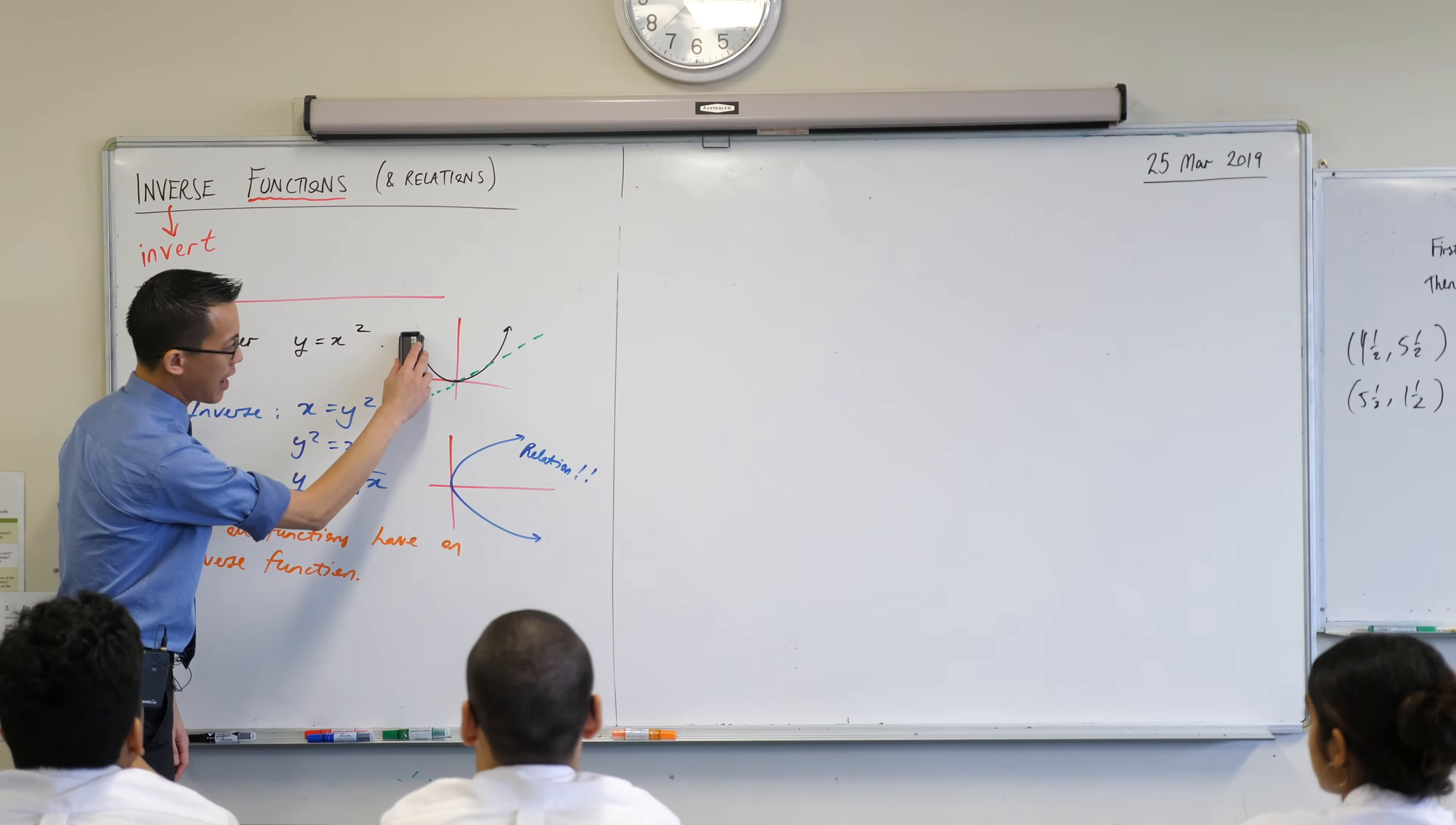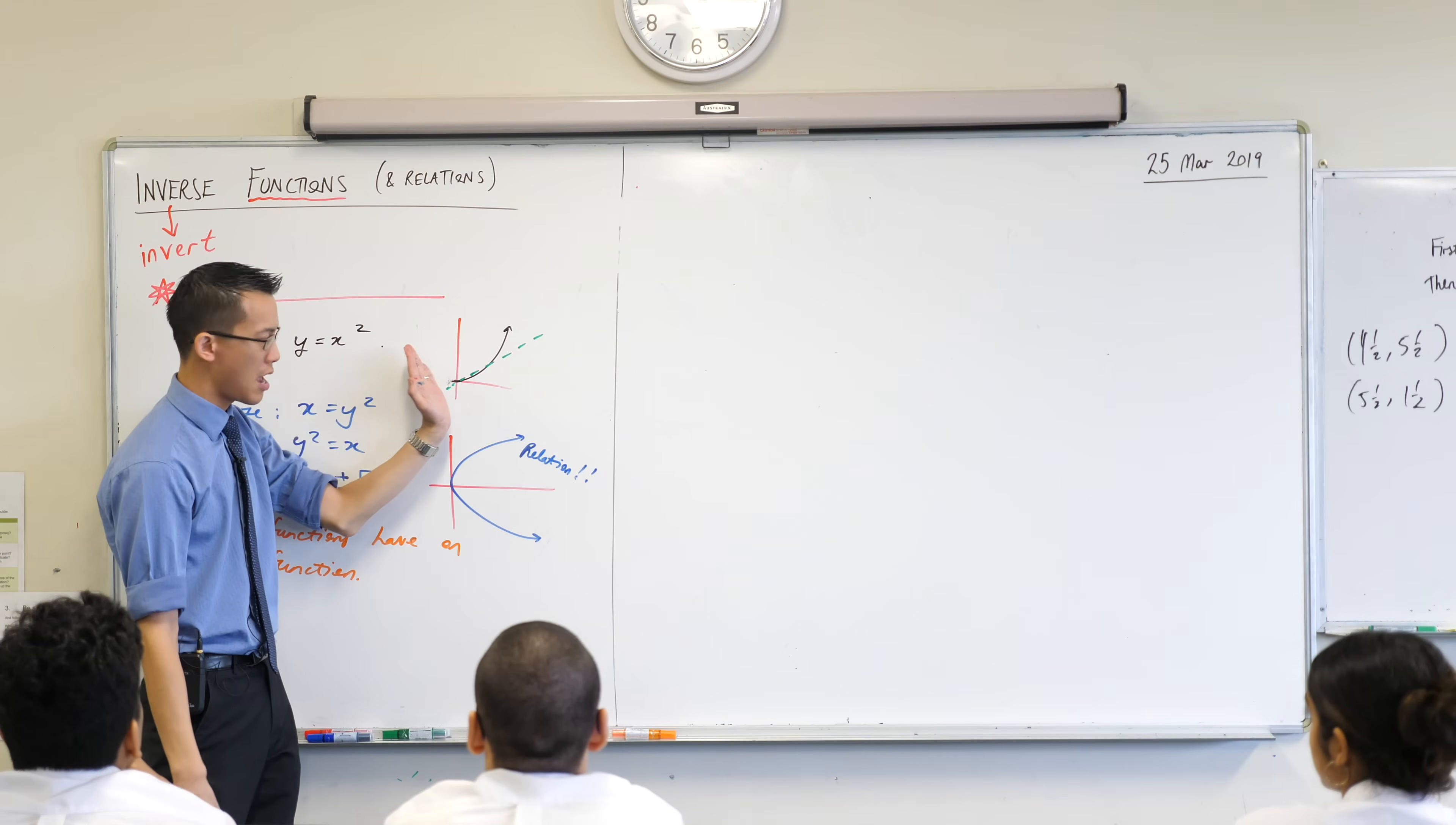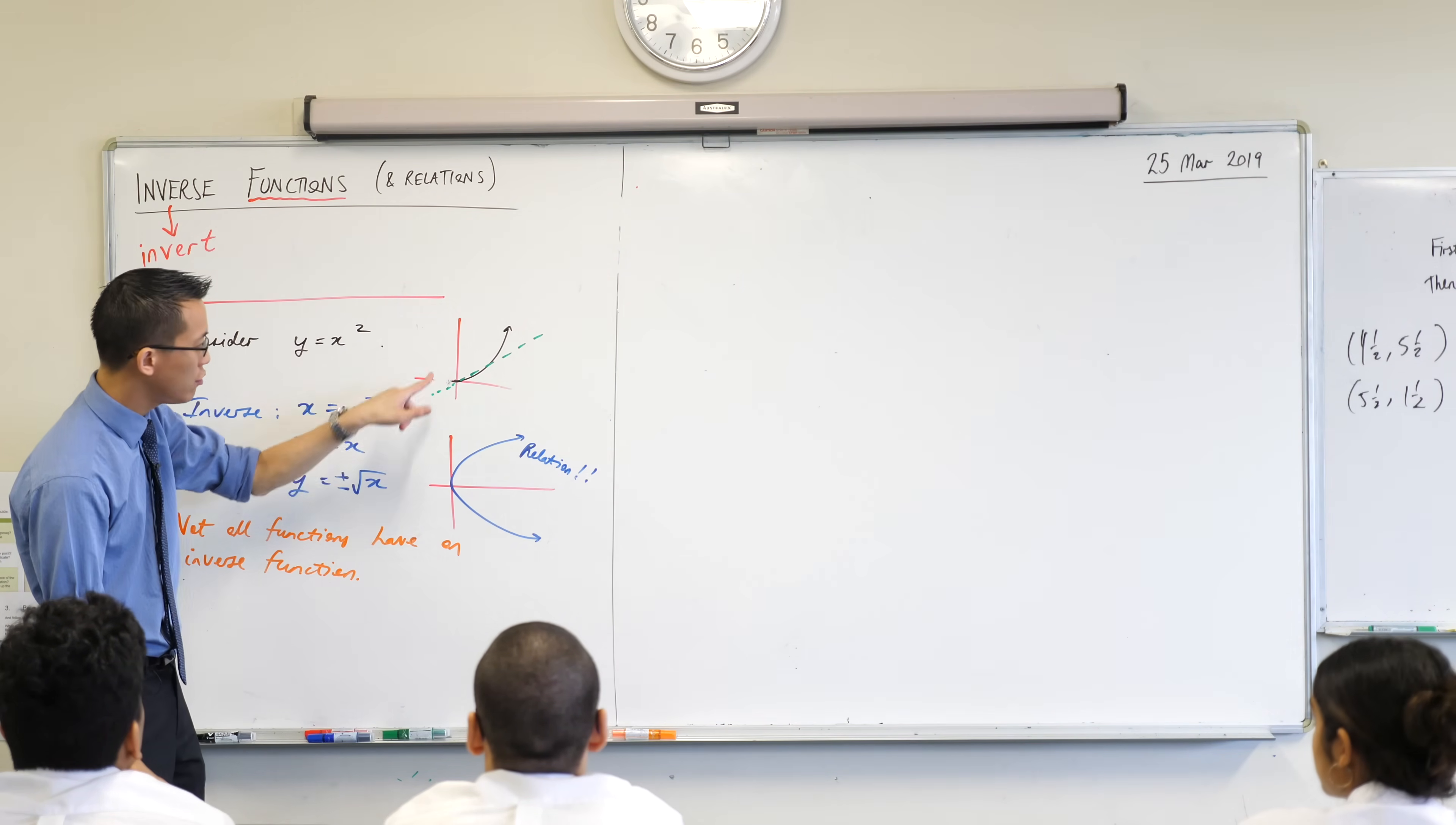If, for example, I just take that part there. So if I sort of define it piecewise, if I restricted the domain and said, I just want x is greater than zero. What happens when you do the reflection? You know that visual thing. Which part are you going to get?